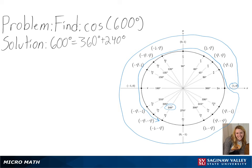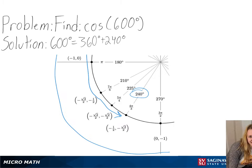Since we are finding the cosine value, we will be taking the x-coordinate of our value, which in this case is negative one-half.